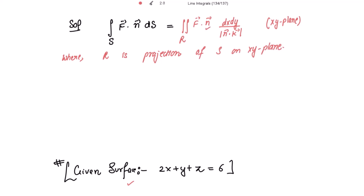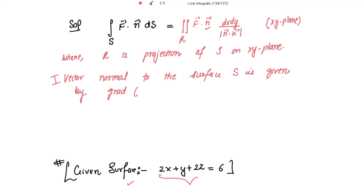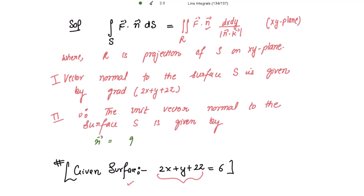n⃗ is the unit vector normal to surface S. The vector normal to surface S (not the unit vector) is given by the gradient of the left-hand side of the surface equation, that is grad(2x + y + 2z). Therefore, the unit vector normal to surface S is n⃗ = grad(2x + y + 2z) divided by |grad(2x + y + 2z)|.